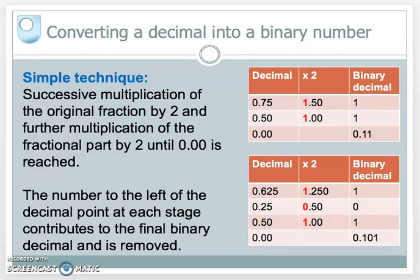The binary decimal representation of the decimal fraction 0.625 is 0.101. We can nicely convert our fractions in decimal notation into a decimal in binary notation by successive multiplication by 2. A very simple technique.